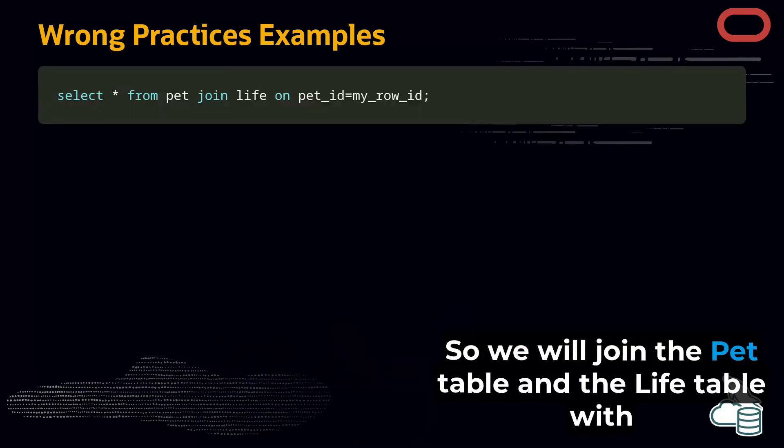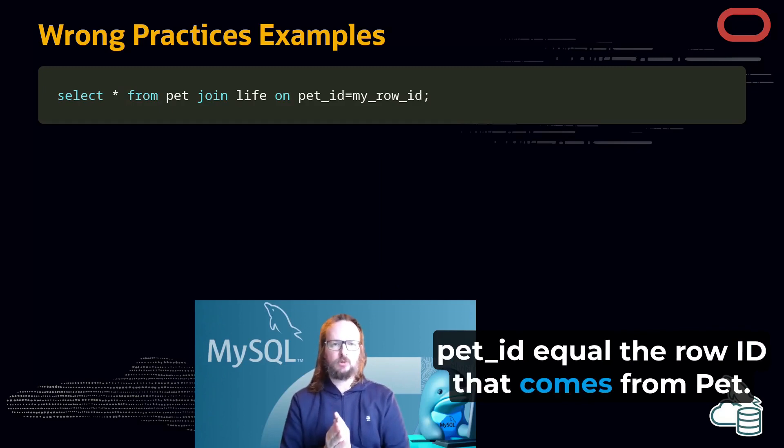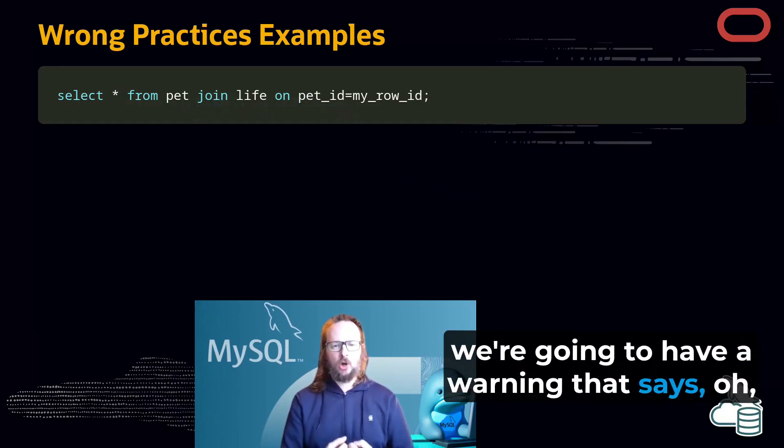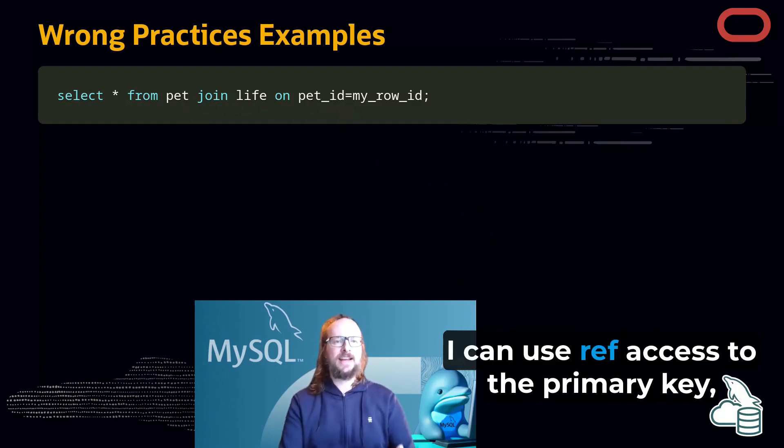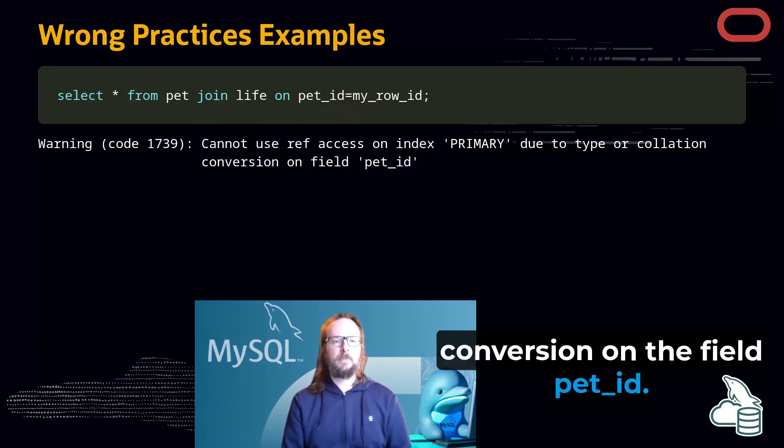So let's have a look at what we do. We will join the pet table and the life table with pet ID equal the row ID that comes from pet. And what happens here, we're going to have a warning that says, I cannot use ref access on index PRIMARY due to type or collation conversion on the field pet ID.